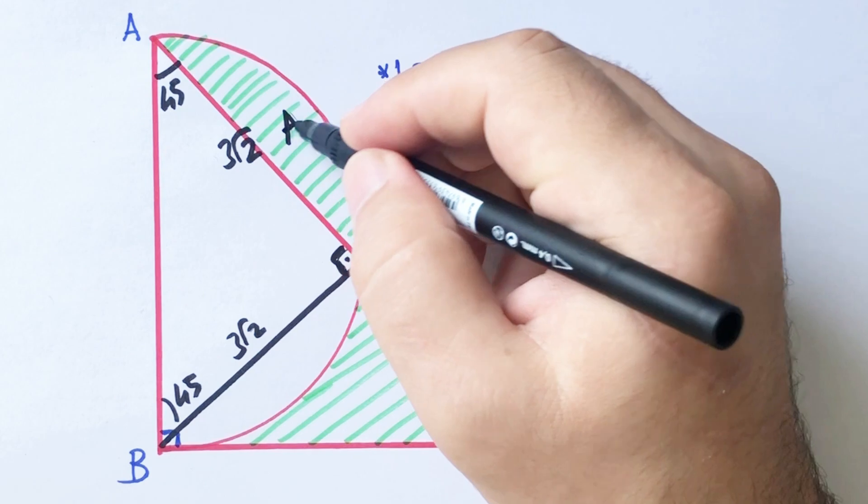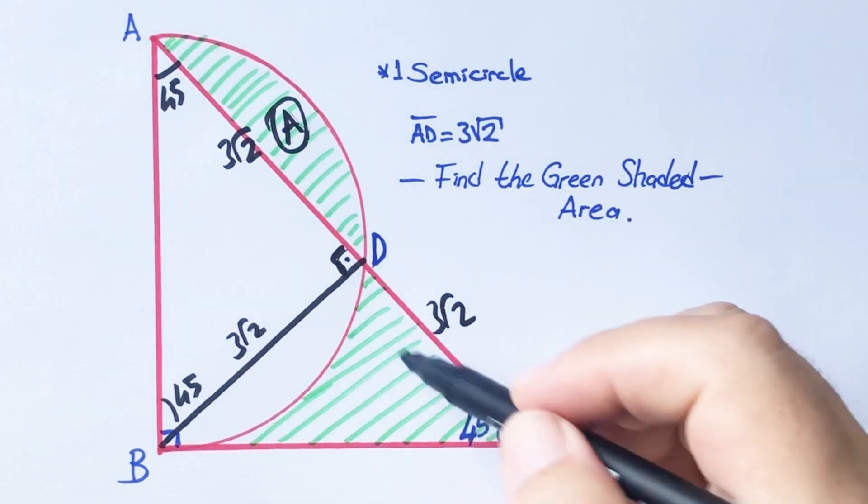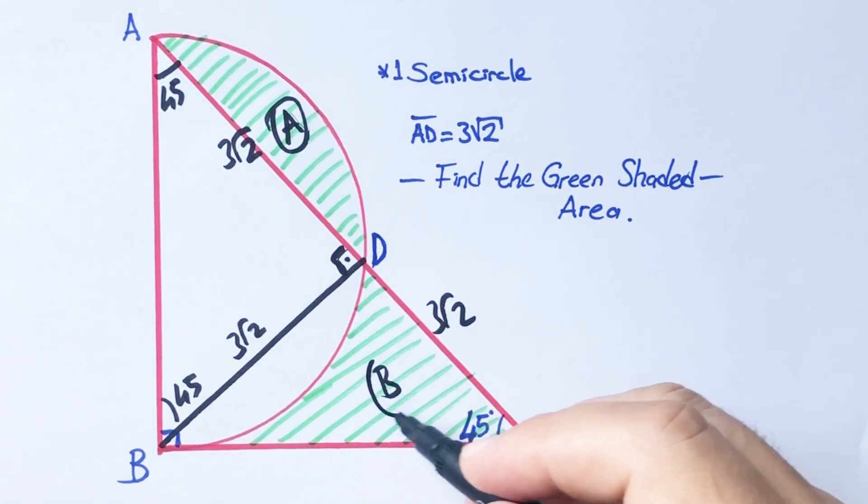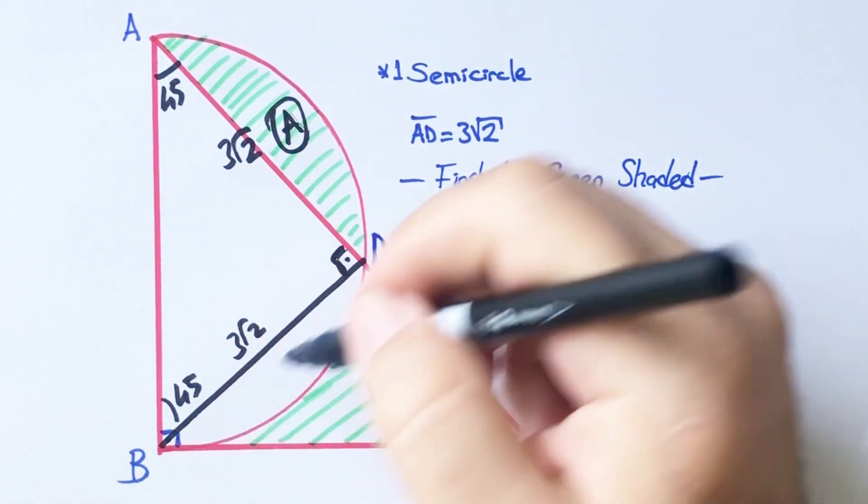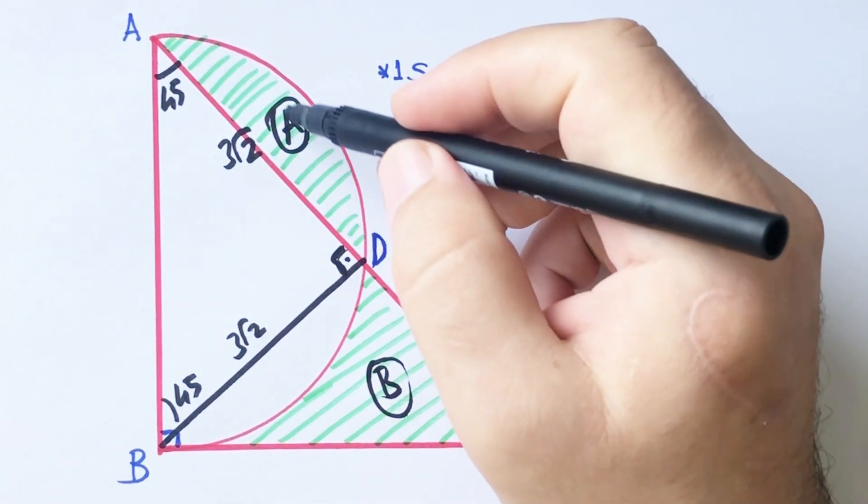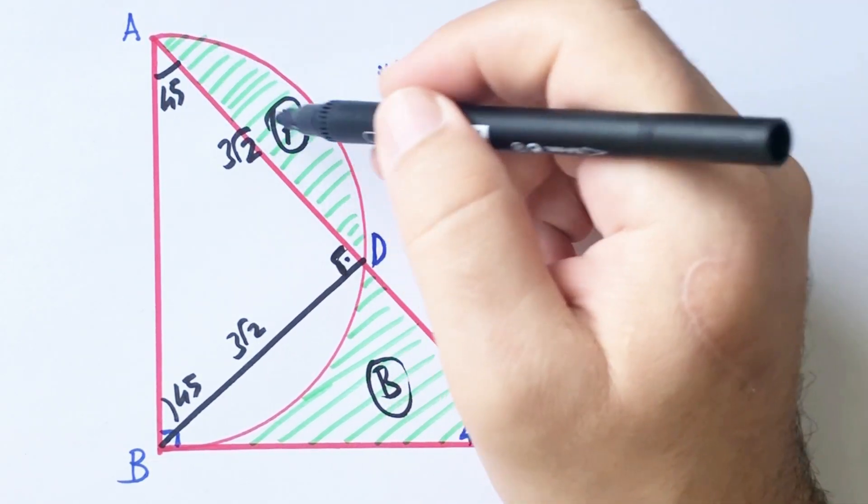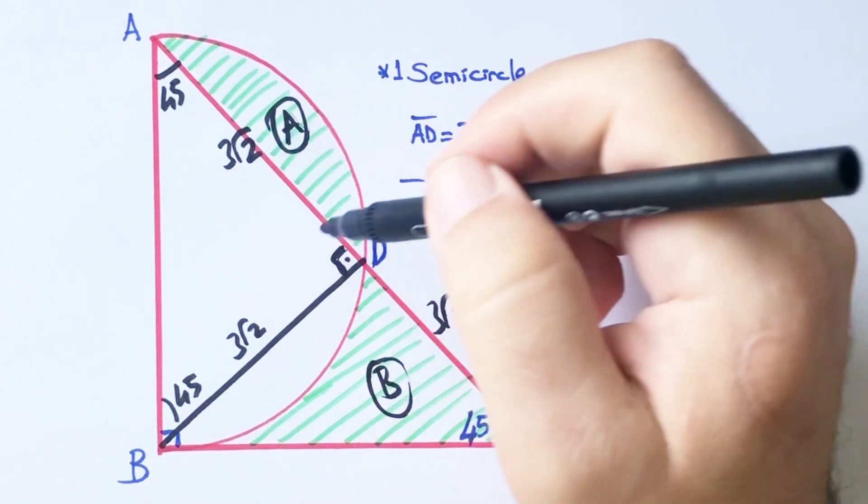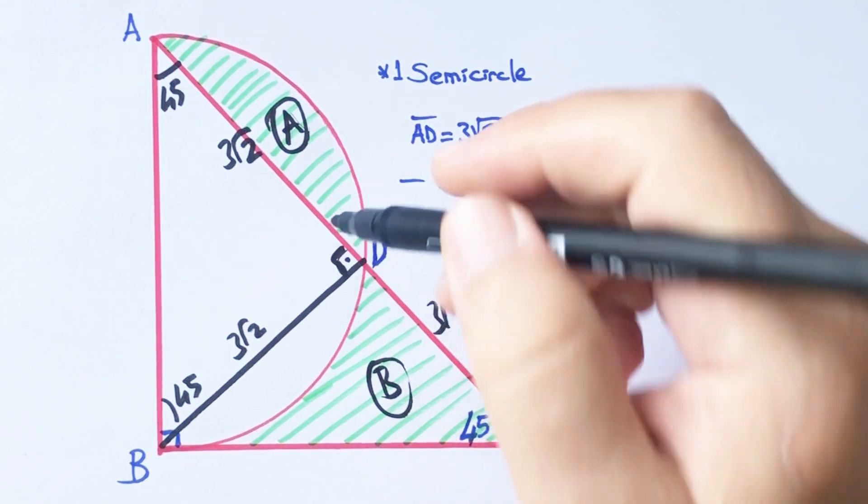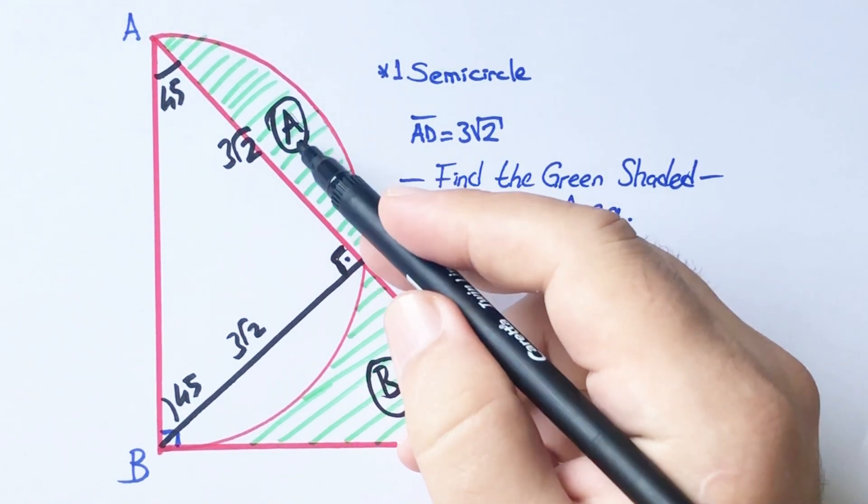This area, let's call it capital A, and this area, let's call it capital B. These chords are equal, which means if here is capital A, this area must also be capital A.